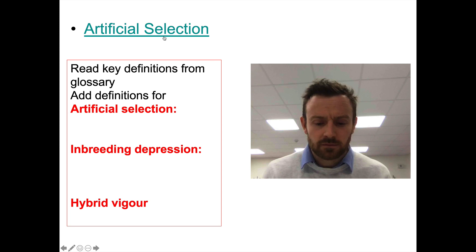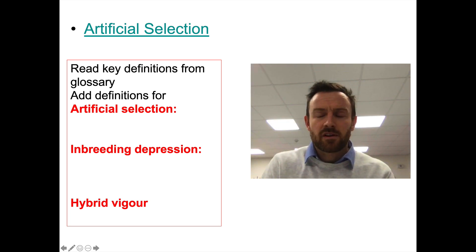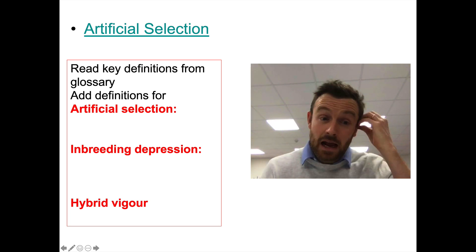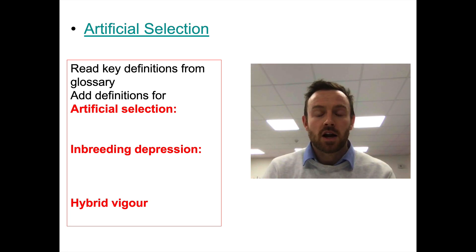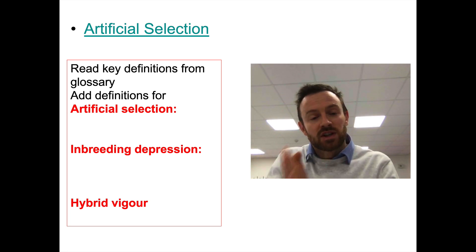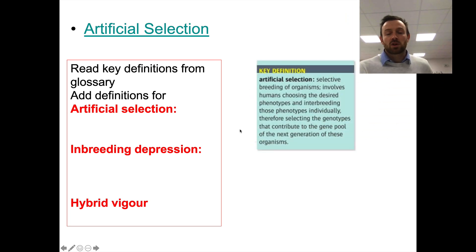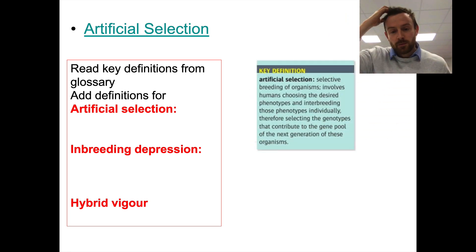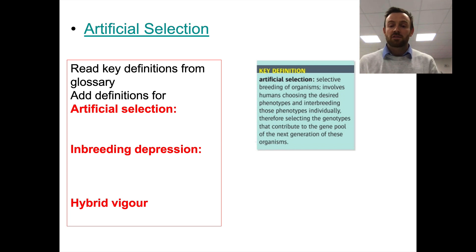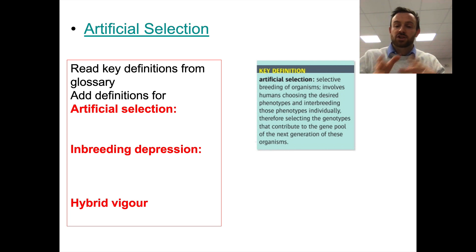I hope you enjoyed that super cow — a very selectively bred cow with lots of muscle. You saw the process of choosing which animals to breed over generations and generations. Artificial selection — here's the definition from the textbook: it's the selective breeding of organisms, involving humans choosing the desired phenotypes and interbreeding those phenotypes, therefore selecting the genotypes that contribute to the next generation, the next gene pool.